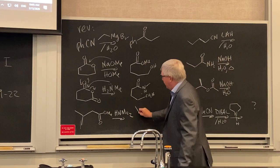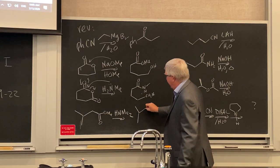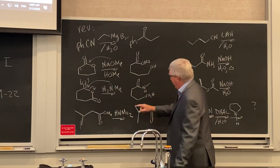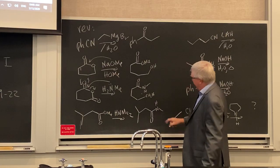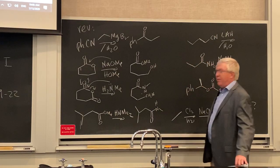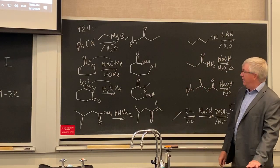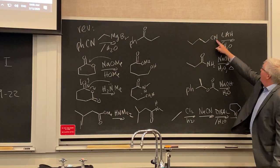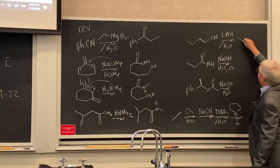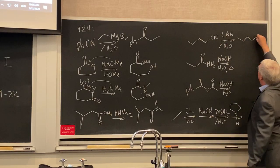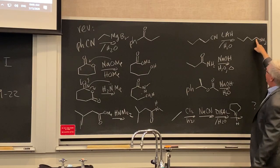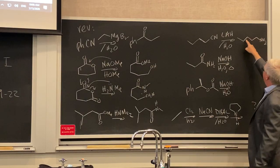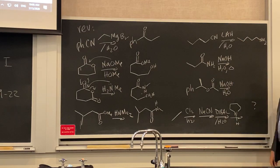For the next problem, you have an ester, and the more stable derivative is the methyl amide. Back to cyanide with LAH — that goes to a primary amine. Make sure you count that carbon: one, two, three, four, five carbons. After quenching, you get that primary amine.